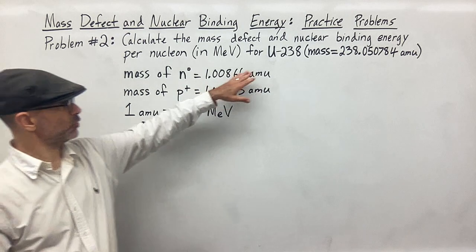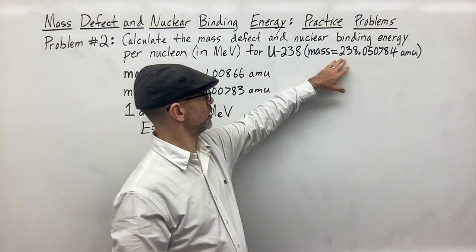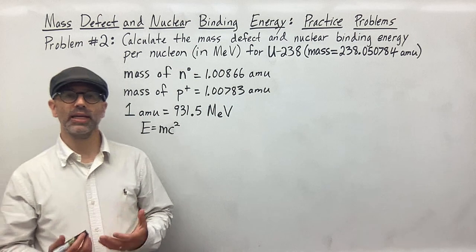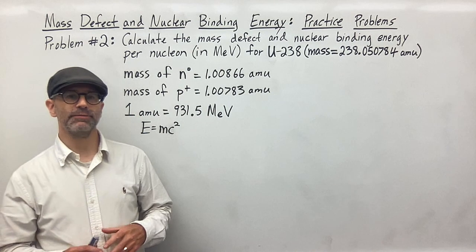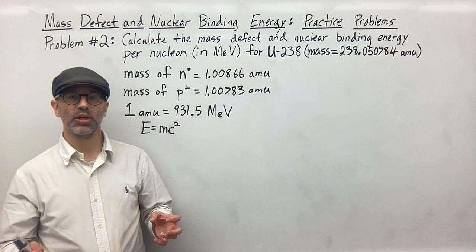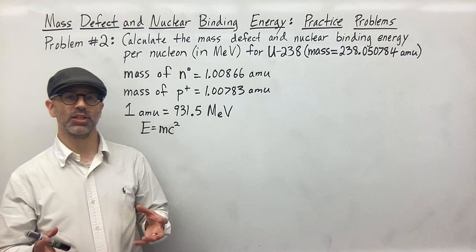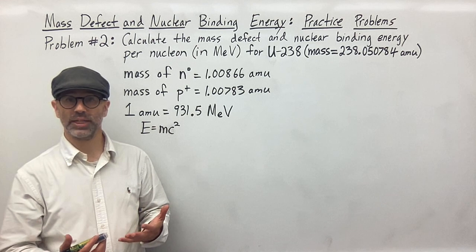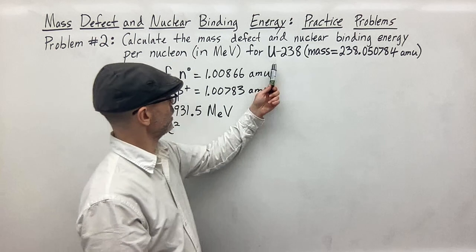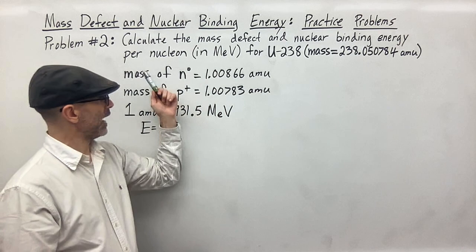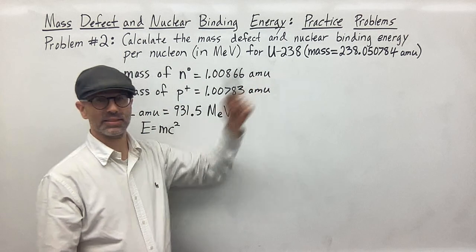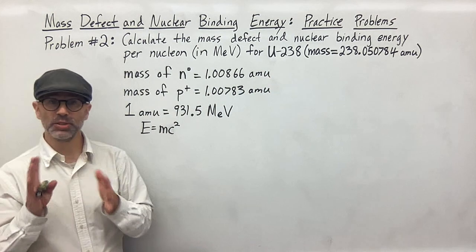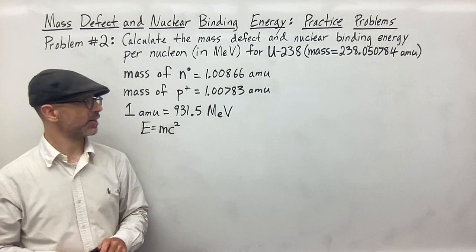We're given uranium-238. The mass of uranium-238 is 238.050784 AMUs and we need to find the mass defect. The mass defect is the difference in mass between when you add up all the neutrons and protons of your nucleus individually and then compare that with the mass of the nucleus itself. The difference between those two numbers is going to be the mass defect.